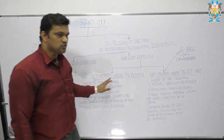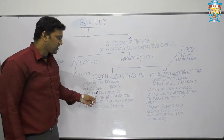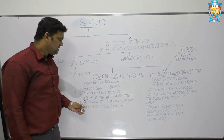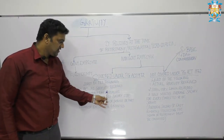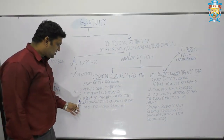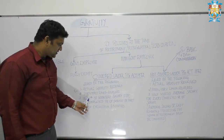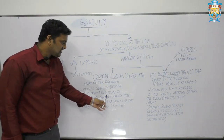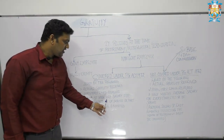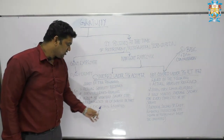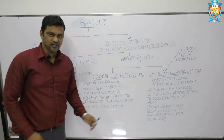The first two rules are the same — actual gratuity received, and statutory or maximum limit of 20 lakhs. The third condition for covered under the Act says 15 divided by 26 of monthly salary for every completed year of service, or part thereof exceeding six months.